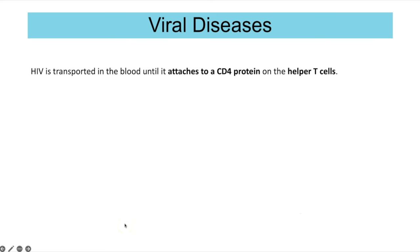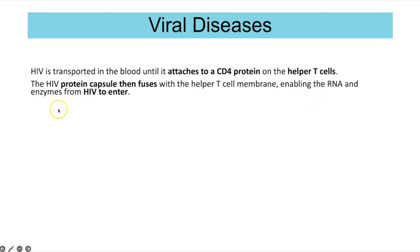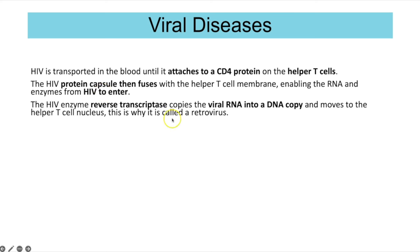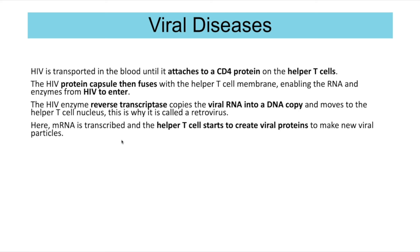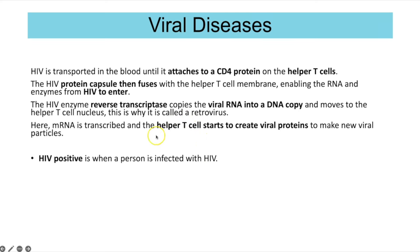HIV is transported in the blood and attaches to CD4 proteins — receptors on the outside of helper T cells, which are part of the immune response. The HIV protein capsule fuses with the helper T cell membrane, enabling the RNA and reverse transcriptase to enter the host cell. The enzyme reverse transcriptase copies the RNA into DNA, which moves into the nucleus. Once there, the viral DNA is transcribed and translated alongside host proteins, assembling new viral particles.